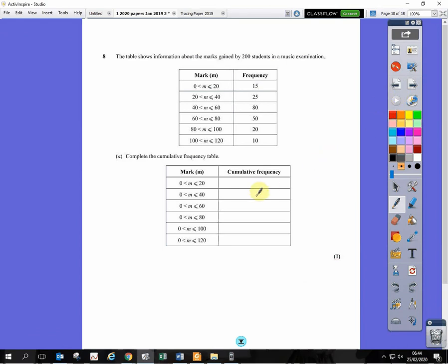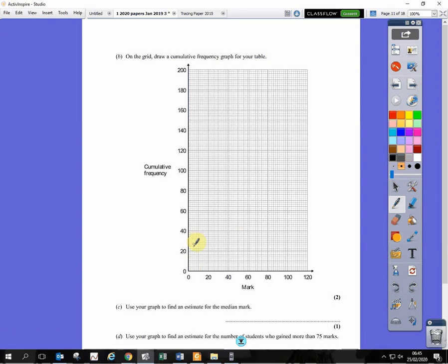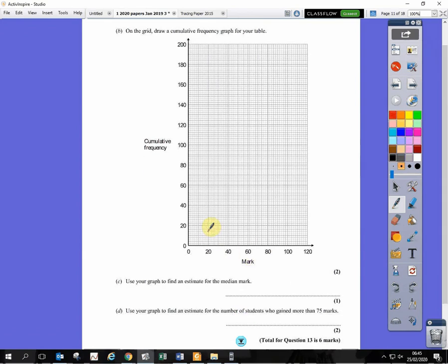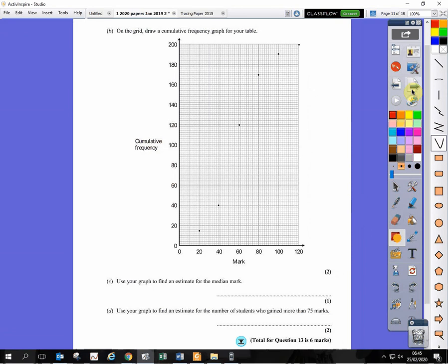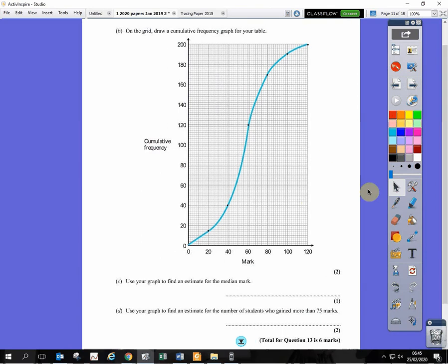Next question. Complete the cumulative frequency. Just like a running total. So you have 15, 40, 120, 170, 190, 200. Plot the points. So you have to be careful with the scale here. 2 squares is worth 1. So 15 is right there. 40 to 40. Remember to plot at the end points. You can join from 0 or you can join from the first one to the last one. It's entirely up to you.